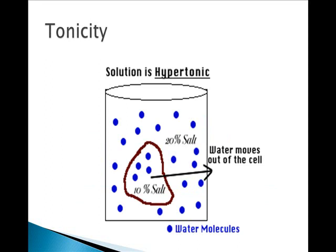In a hypertonic solution, the solution has a greater concentration of solutes on the outside of the cell membrane. For example, if a cell from a freshwater fish is placed into a beaker of salt water, the cell would shrink. That's also called crenation.